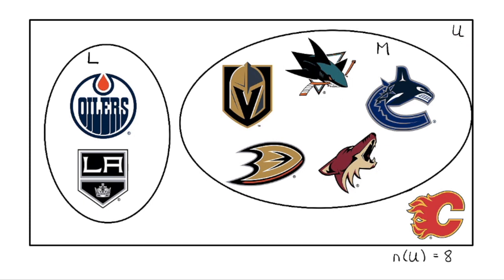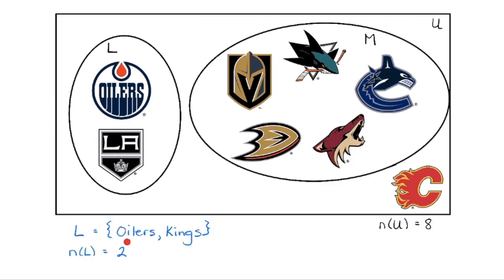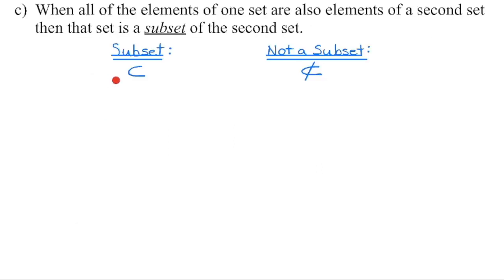There are two teams or two elements within the love category of my subset, and five teams in the mediocre category of my subset. This is a list of the elements within my love category; this is the number of elements within my love category. We can also say that L is a subset of the universal set, so every element within my love category is also a member of the universal set. You may recognize that the subset symbol looks very similar to the less-than symbol — there are fewer elements in my love category than in the universal set, but every member of L is within that universal set.